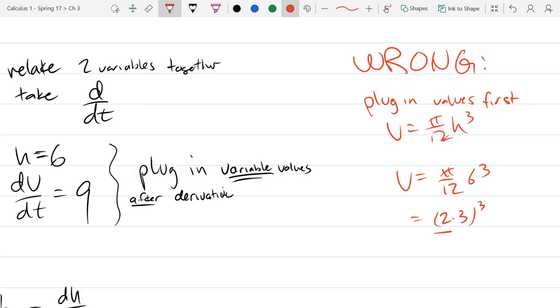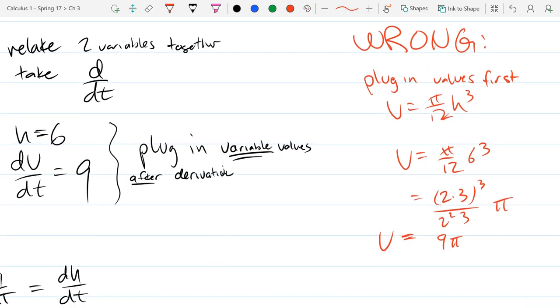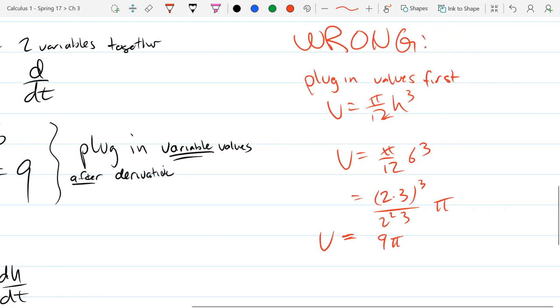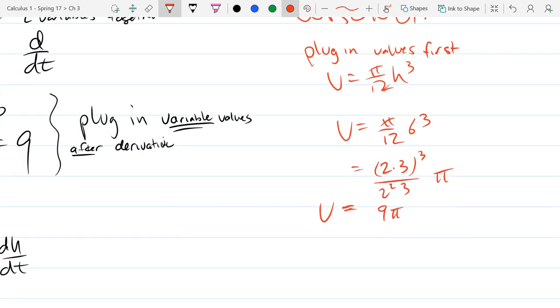So what happens if I plug in first? This is wrong. So original v equals pi over 12 h cubed. Well, first indication, there is no dv dt to plug anything into. So that should be one indication. But aside from that, you just keep going. So before I do any calculus, what does this tell me? It tells me something. This tells me the volume at the moment that the height was 6. What it doesn't tell me is how that volume is going to change. So it is true this is the volume.